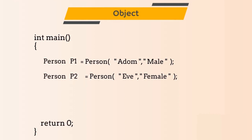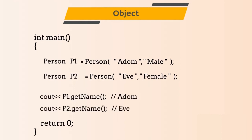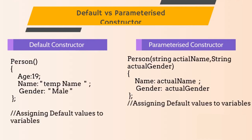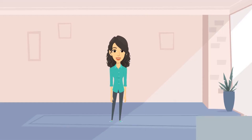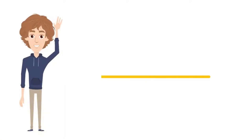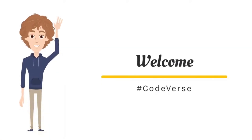If we print p1.name then the answer will be Adam, and if we print p2.name then the answer will be Eve. The same applies for gender. Always remember: if we are passing parameters to the constructor, it is called a parameterized constructor; if we are not passing any parameters, it is called a default constructor. You can see examples on your screen. Soon I will be starting a new video series called Java in Animated Way, so if you are interested please subscribe to the channel.